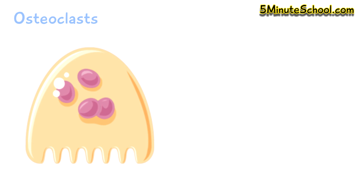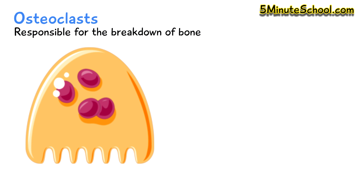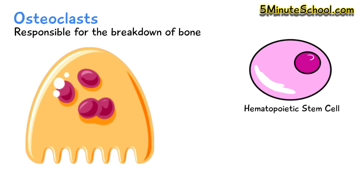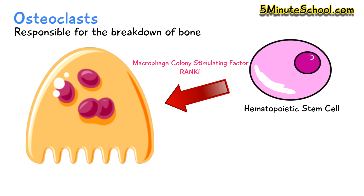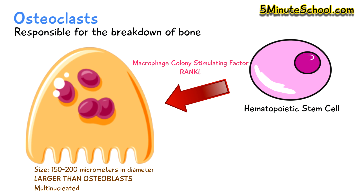Now let's move on to osteoclasts, which are responsible for the breakdown of bone. They originate from hematopoietic stem cells and differentiate with the help of macrophage colony-stimulating factor and RANKL, along with some other factors. They are much larger than osteoblasts and are multi-nucleated.